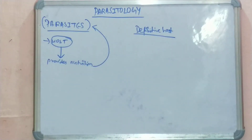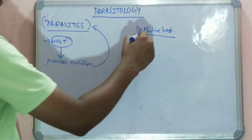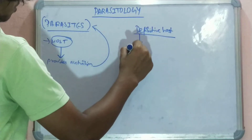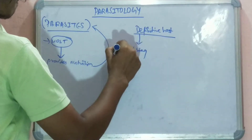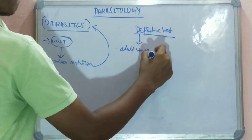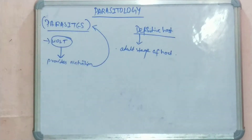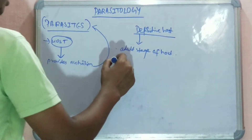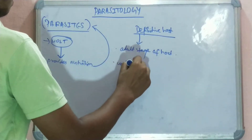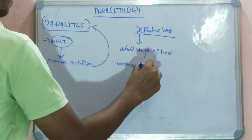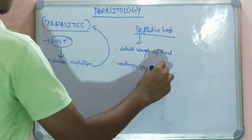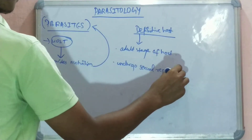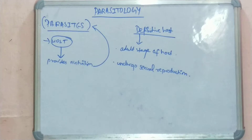The next term is definitive host. A definitive host is an adult stage of a parasite, where it undergoes sexual reproduction — both in males and females of mammals. So this is the adult stage of the host.